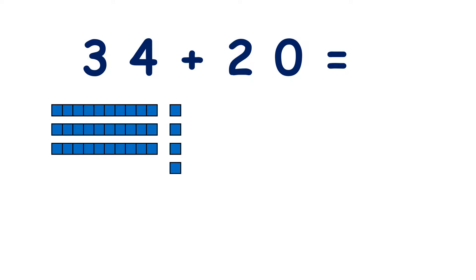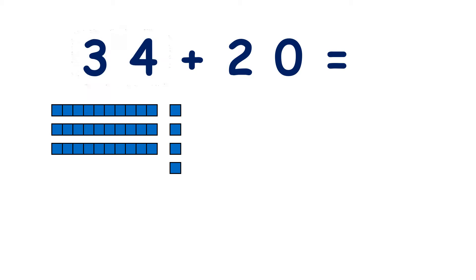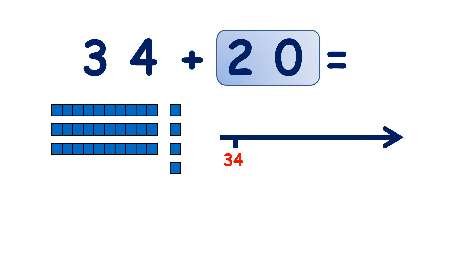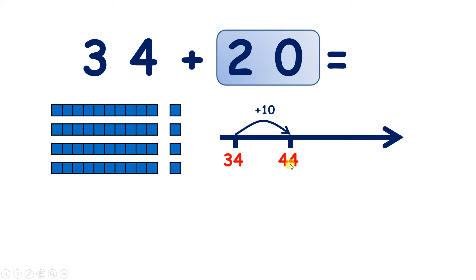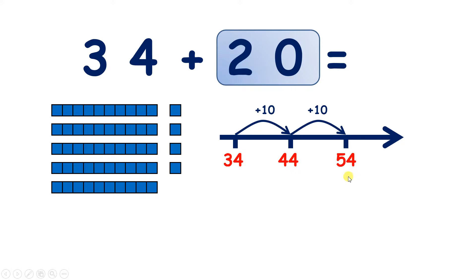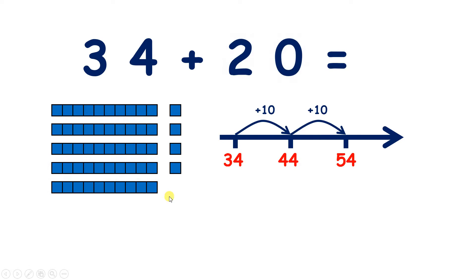We have 34 add 20. So we start with 34, which is 3 tens and 4 units, and we want to add 20. So on a number line, we can start at 34. Now if we add 10, we have 44. And if we add another 10, we have 54. So we've added these two tens, which means we've added 20. So 34 add 20 is 54.